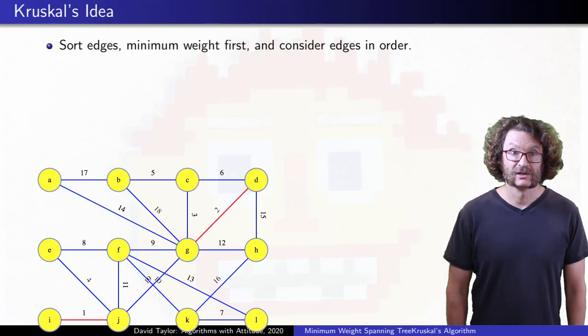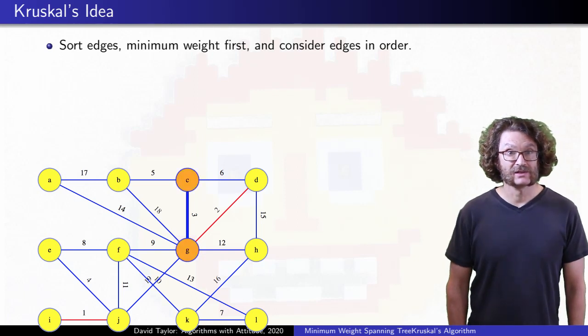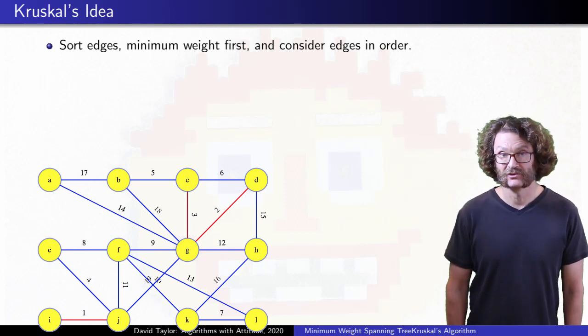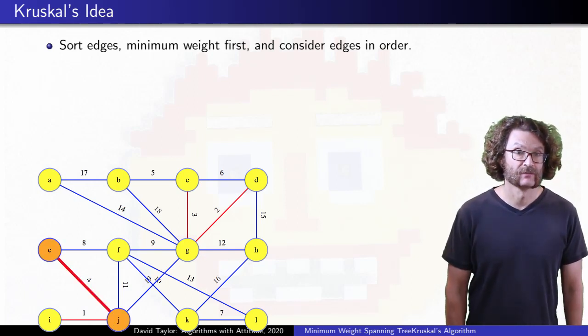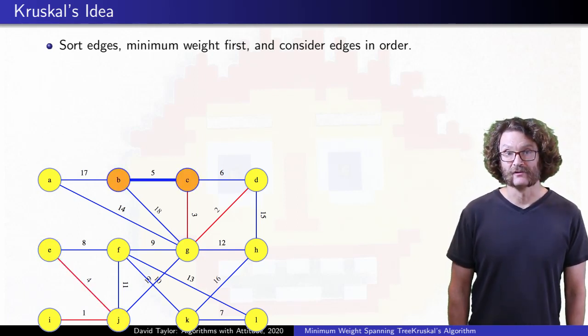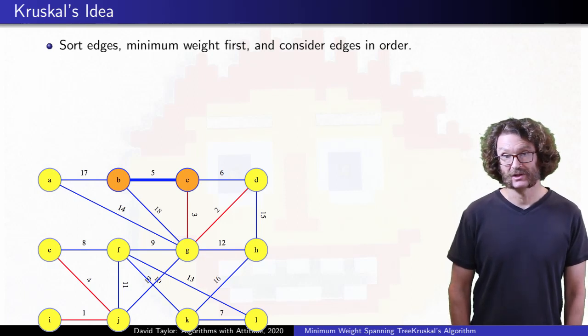In the animation, edges we haven't looked at yet are blue, Minimum Spanning Tree edges are red, and discarded edges will be faint. When we consider edge 5, do we add it to the Minimum Spanning Tree?